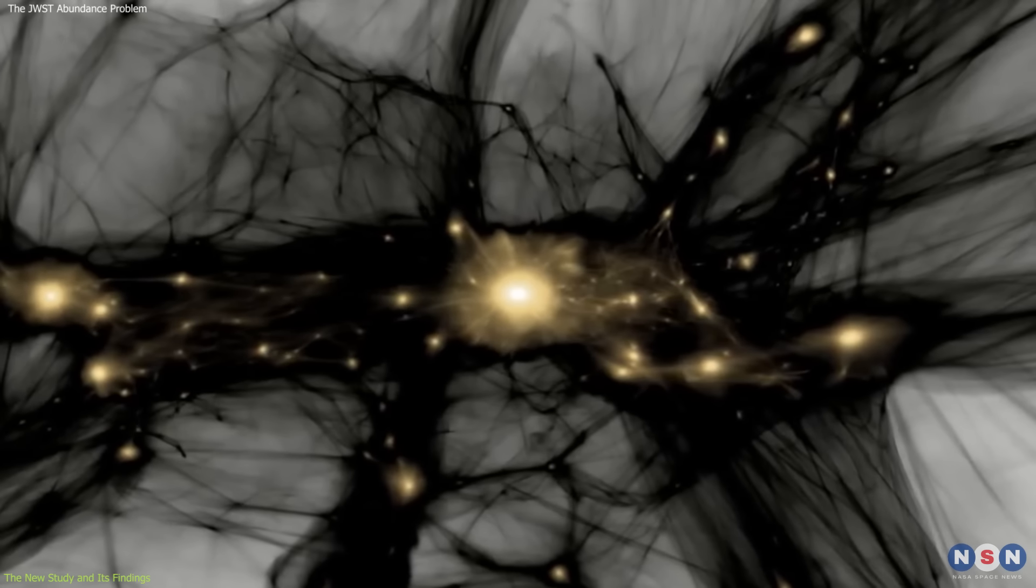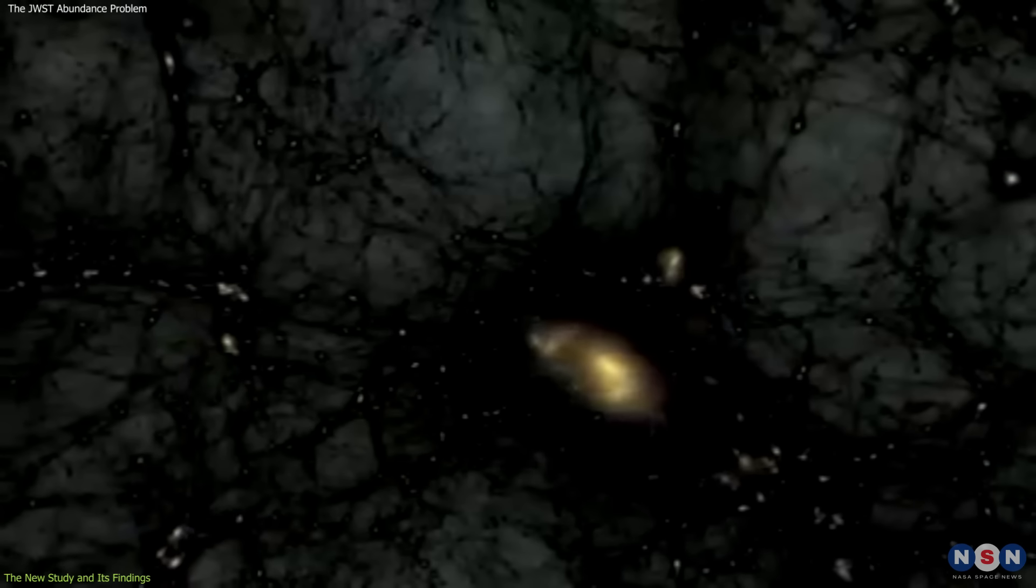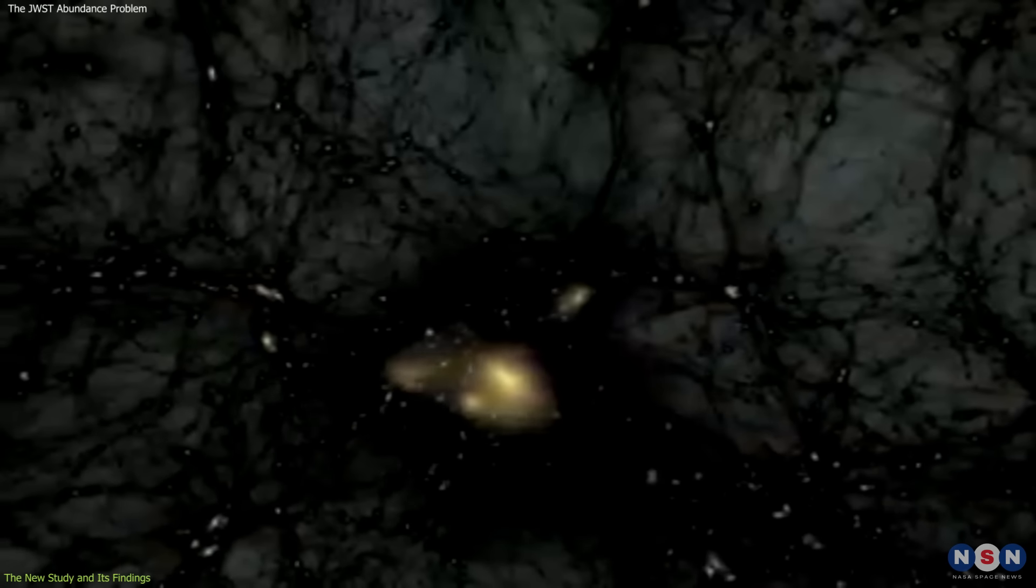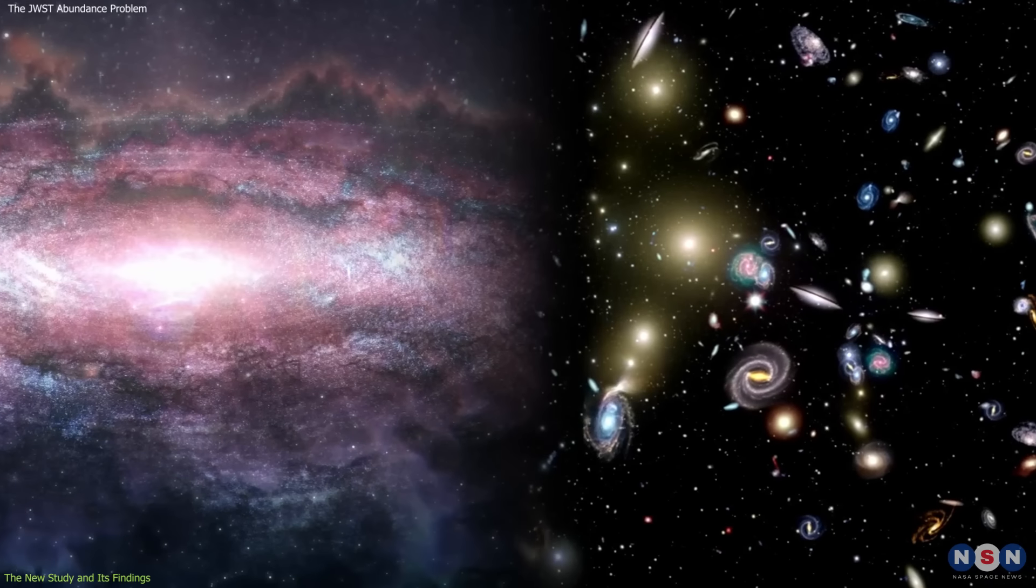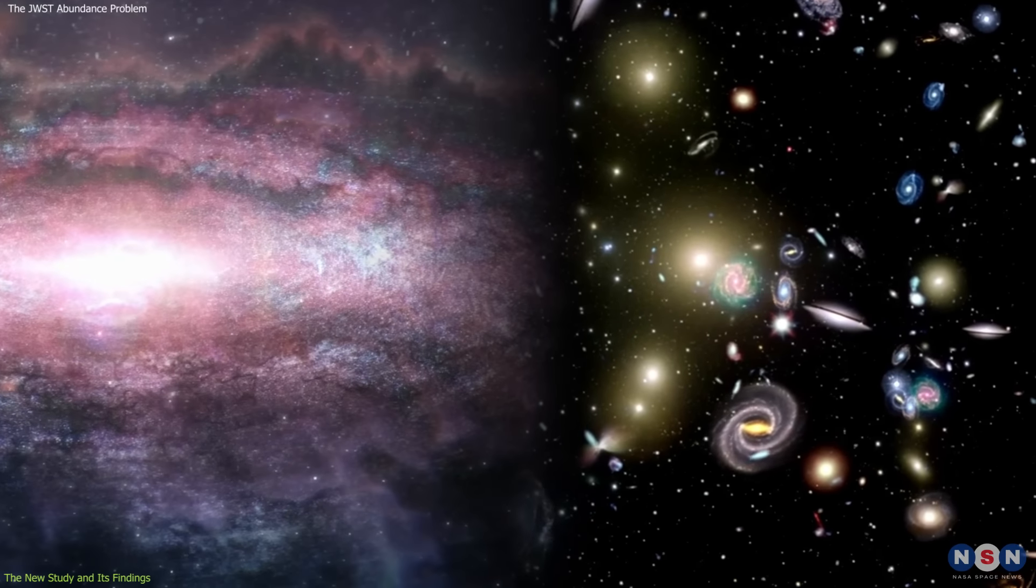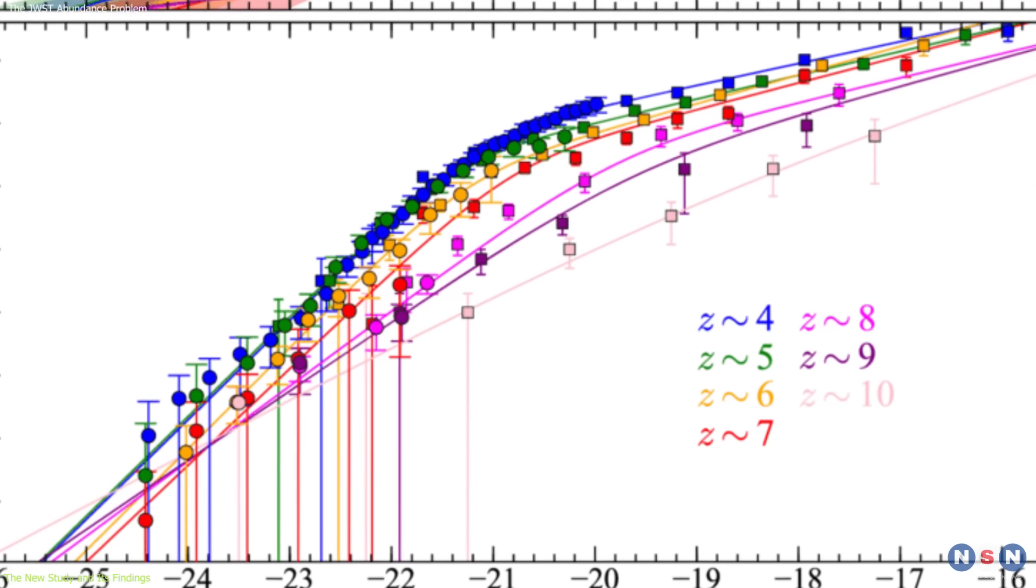Therefore, if the dark matter or dark energy properties are changed, or if there are some new physics involved, they would have an impact on both types of galaxies, and they would change the shape and the amplitude of the ultraviolet galaxy luminosity function.